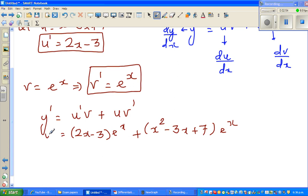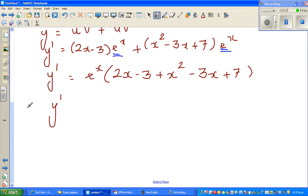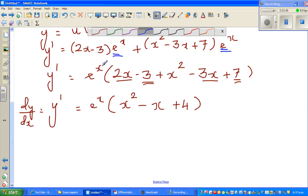For these questions, you don't need to simplify. I would like to simplify a little so we can check our answer. If you look at these two, you can factor out e to the power x. So you have e to the power x times 2x minus 3 plus x squared minus 3x plus 7. Let's simplify the bracket. dy/dx is equal to e to the power x times x squared minus x plus 4. This is your derivative of the given function.